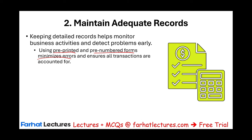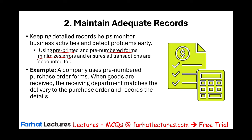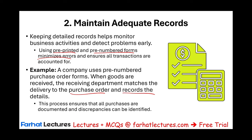For example, you can pre-number forms such as purchase orders. When goods are received, the receiving department matches them to the purchase order and records the details, so we know exactly which purchase it is. This process ensures that all purchases are documented and accounted for. If we have 10 purchases and received 8, we can match the 10 and know the two are still outstanding or missing. We can identify any discrepancies because we are accounting for every single purchase order form.